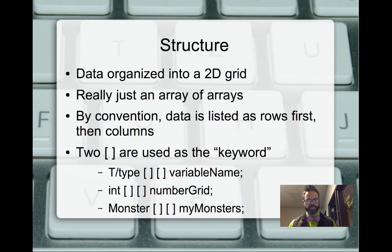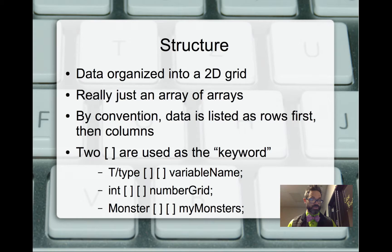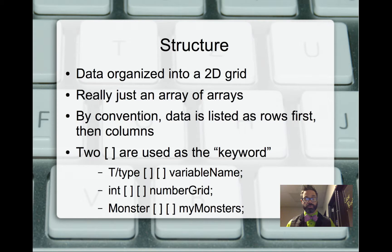The basic structure is the type of object we're going to be storing inside the 2D grid, the two sets of square brackets that define that it is a 2D array, followed by its variable name, and of course our great friend, the semicolon.